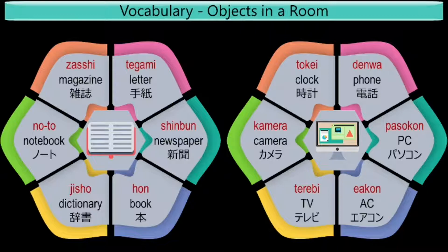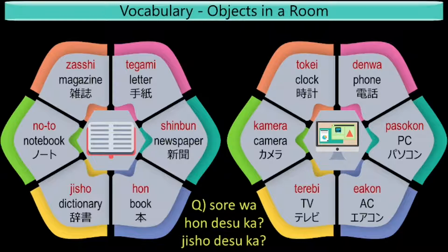Let us learn about interrogative sentences in which an answer is to be chosen out of alternatives ending with Ka. I'll give you an example. To ask if that is a book, in Japanese, the question will be: Sore wa Hon desu Ka? To ask if that is a dictionary, the question will be: Sore wa Jisho desu Ka? Now, to ask if that is a book or a dictionary, I have to combine the two questions. So the new question will be: Sore wa Hon desu Ka? Jisho desu Ka?